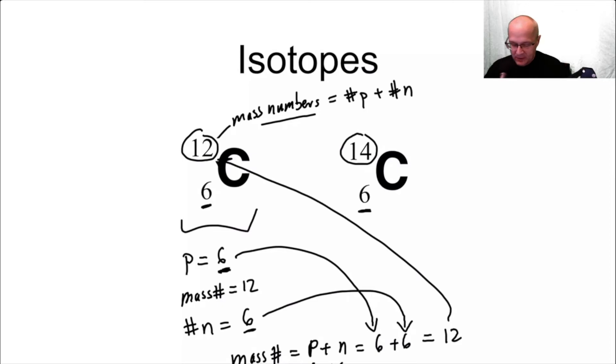Now for this one here, the mass number is 14. Number of protons is six, so the number of neutrons is eight. Number of neutrons is eight. So there's eight neutrons in a C14 nucleus. That's how it works.